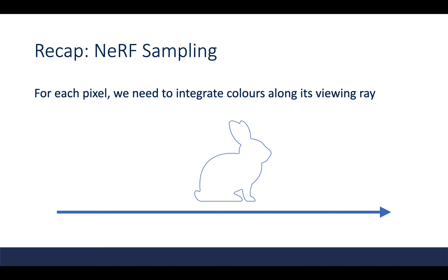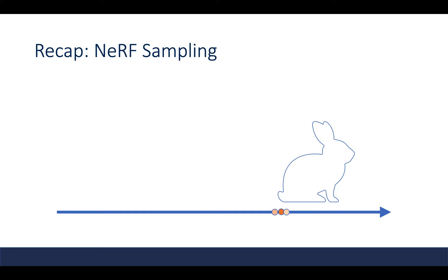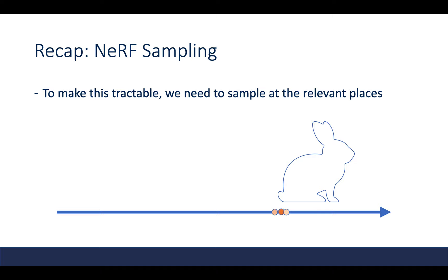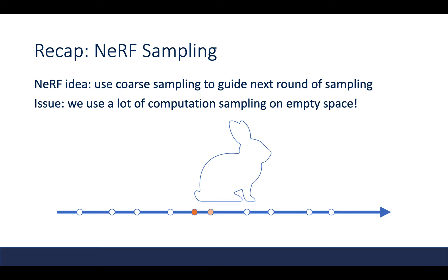To understand the issue at hand, we'll do a quick recap of how NERF does its sampling. For each pixel, we need to integrate colors along a viewing ray to form the image from a novel view. To make this integration tractable, we want to sample at the most relevant places, near the surface intersection of the ray. The idea in NERF is to use coarse sampling to guide the next round of sampling. The issue is that we use a lot of computation sampling in empty space, and since the first round is so coarse, we also sample a lot in empty space during the second round.